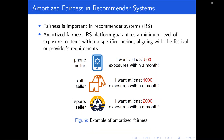Firstly, fairness is an important problem in recommender systems. In this paper, we mainly focus on advertised fairness, which means the recommender platform should guarantee a minimum level of exposure to items within a specific period, aligned with the seller or provider requirements. For example, a phone seller will ask the platform for 500 exposures within a month, and other sellers also claim their minimum exposure requirements. So the question is: how to satisfy their needs while also keeping the retrieval accuracy?